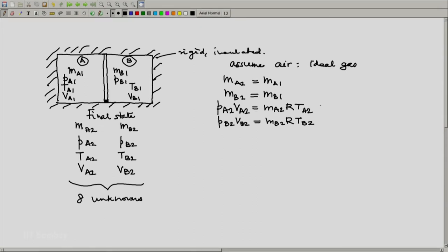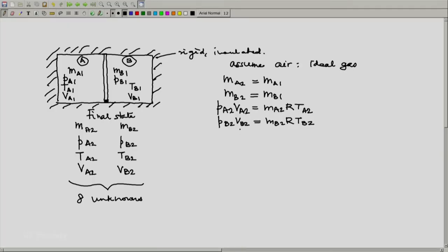Then we are given that the piston is frictionless. Since it is frictionless, pressures on either side would become equal when it finally reaches its stable position. So that means we have one equation which says PA2 is PB2. Five equations.